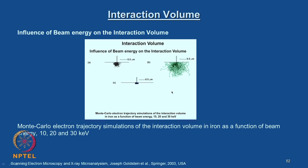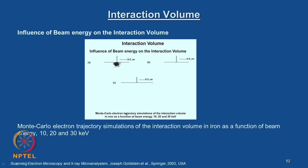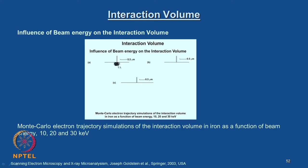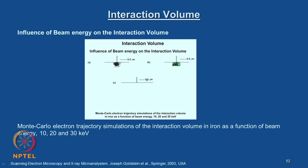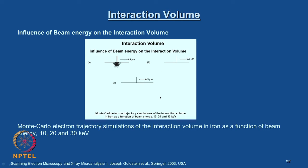We also discussed the influence of beam energy on the interaction volume. This Monte Carlo electron trajectory simulation is for iron as a function of beam energy — 10, 20, and 30 kiloelectron volts. You can see that at low kV the interaction volume is small, and as beam energy increases the electron trajectories spread wider and wider inside the material. Thus beam energy controls the interaction volume of the specimen and electron beam.